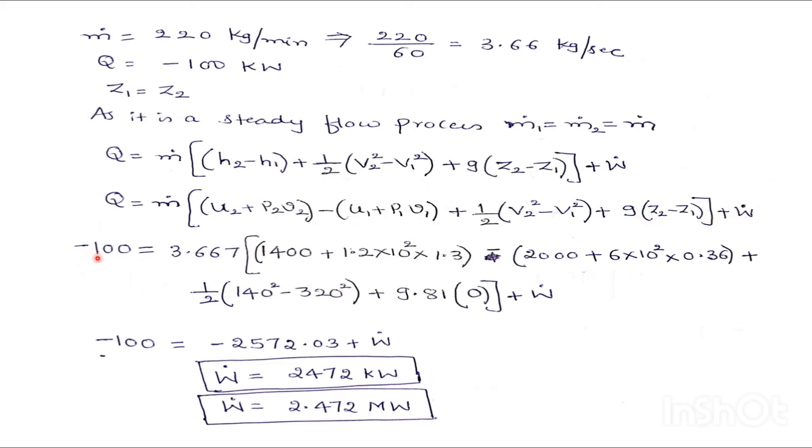So Q is minus 100. Mass flow rate is 3.667. So U2 already he has given these values, 1400 plus pressure he has given in bar. We are converting it in kilo Newton per meter square or kilo Pascal.